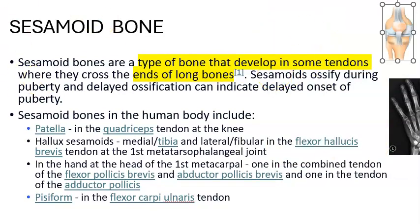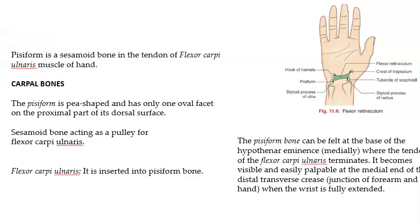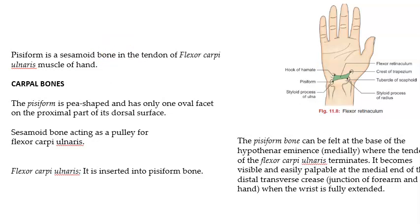The second example is the pisiform, spelled P-I-S-I-F-O-R-M. You can see it here in the right hand near the flexor retinaculum. After the ulna, you should be able to feel the pisiform if you are above 13. It is a sesamoid bone found in the flexor carpi ulnaris tendon, on the ulnar side.